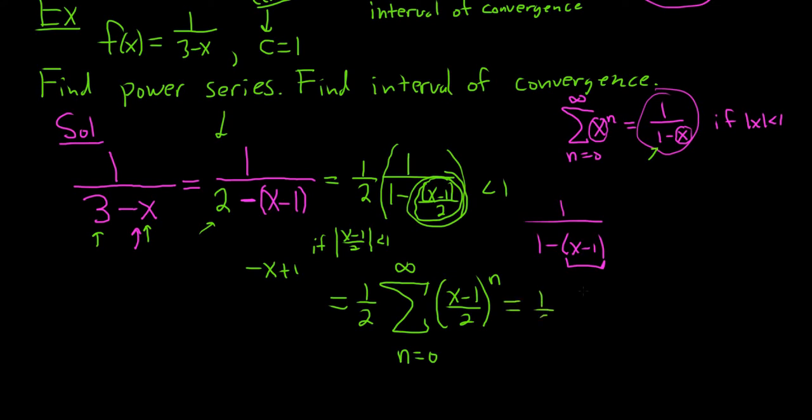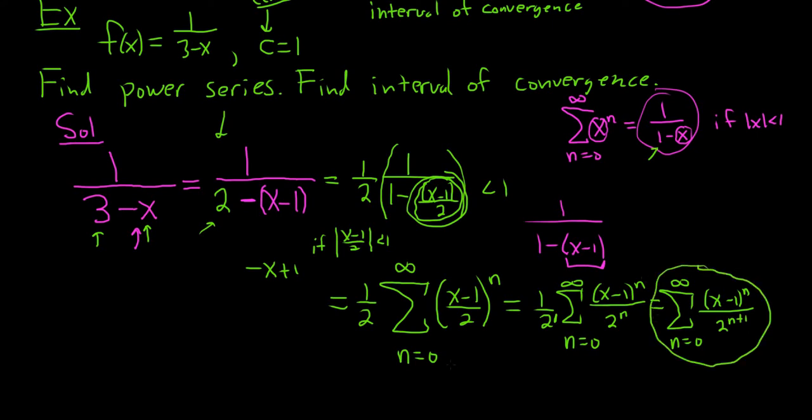This is equal to 1 half infinite sum as n runs from 0 to infinity of x minus 1 to the n over 2 to the n. There's a 2 to the 1 here. So when you distribute this into the sum, you end up adding the exponents. So this is the infinite sum as n runs from 0 to infinity of x minus 1 to the n. And then on the bottom, we get 2 to the n plus 1 because we add the exponents. 2 to the 1 times 2 to the n is 2 to the n plus 1. So this is the answer. This is the series that we wanted. This is the power series representation of the function.